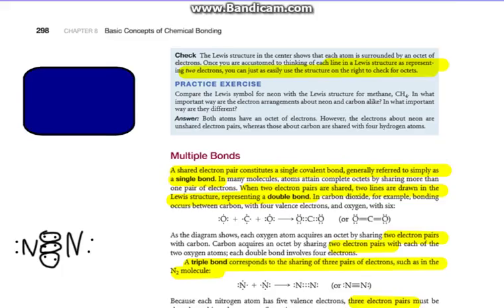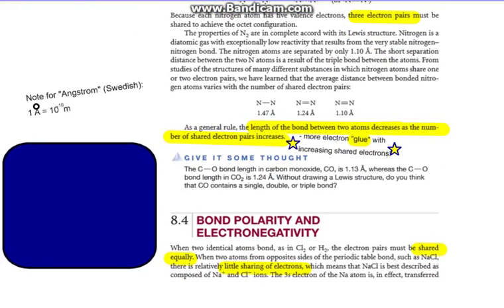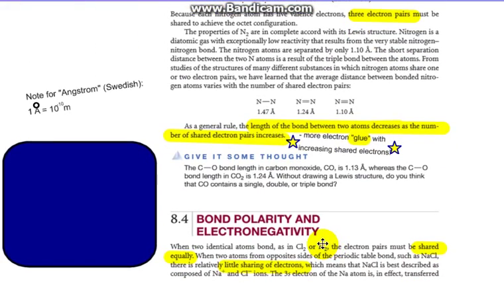Now we'll look at what happens if we have a Cl2 molecule, an H2 molecule, compared to HCl or NaCl. How is the sharing happening when we have two different nonmetals together?